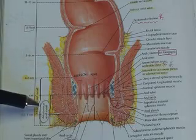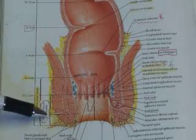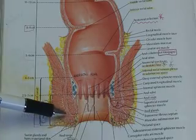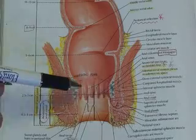In contrast, the anatomical or embryologic anal canal is a bit shorter and it extends from the anal verge only to the dentate line, which is shown here.